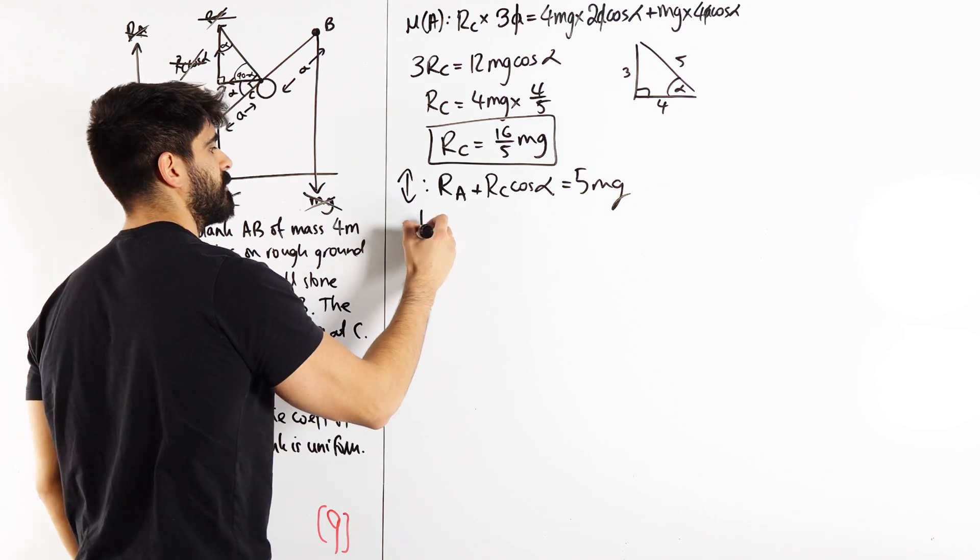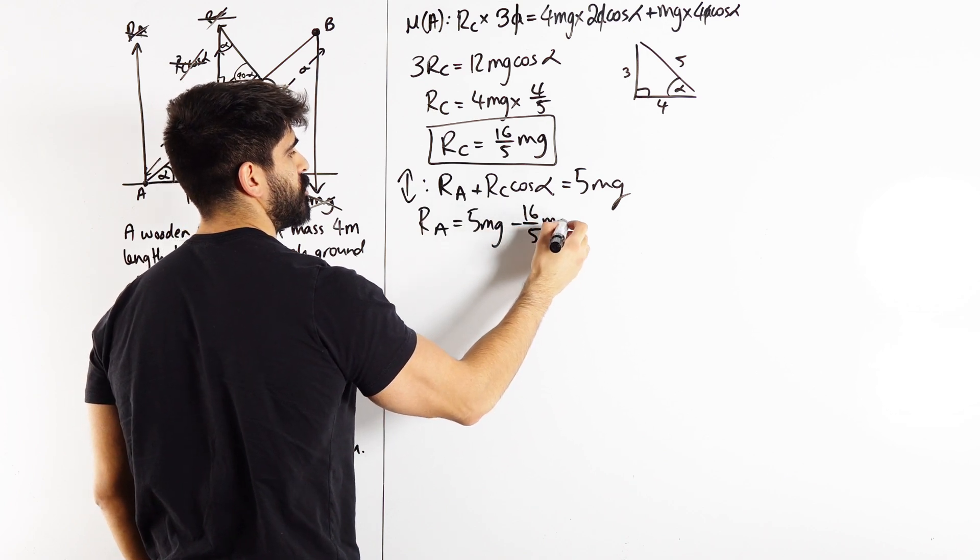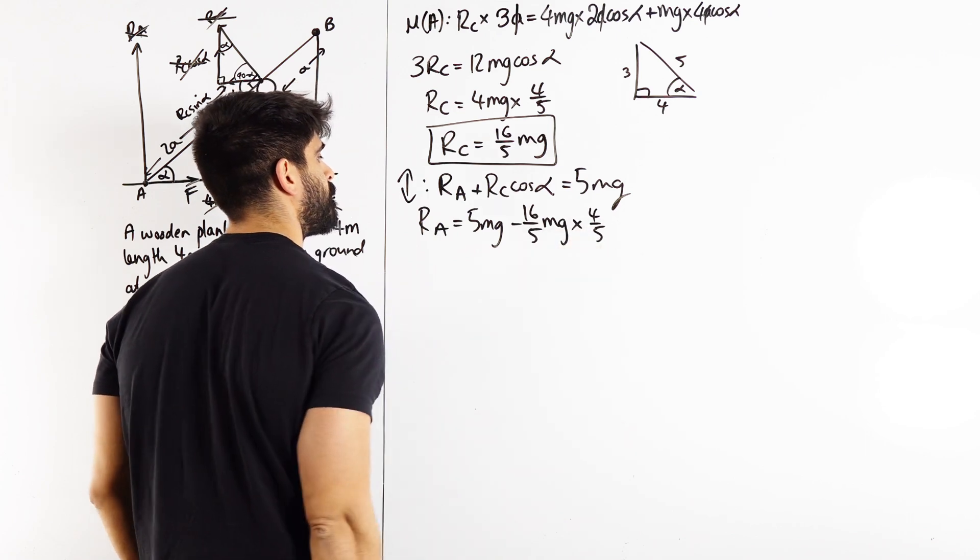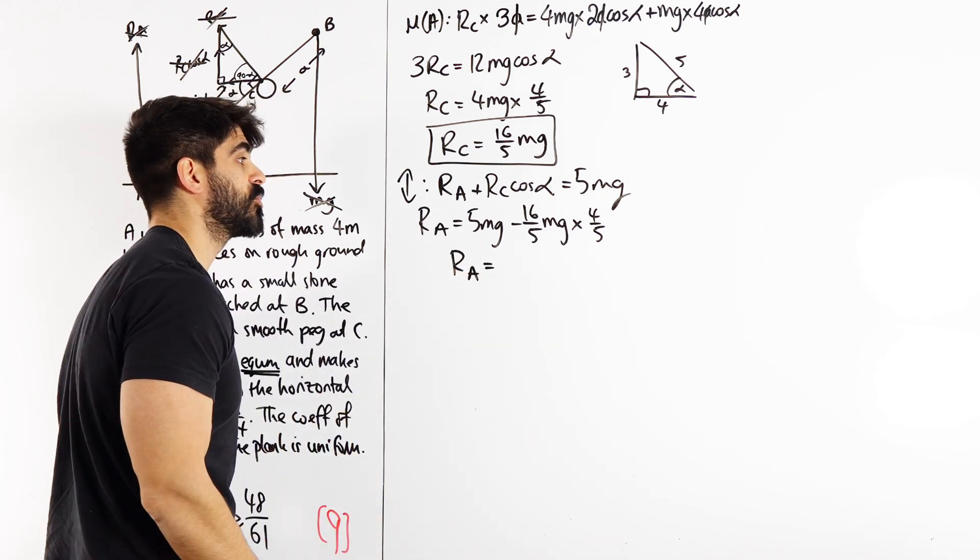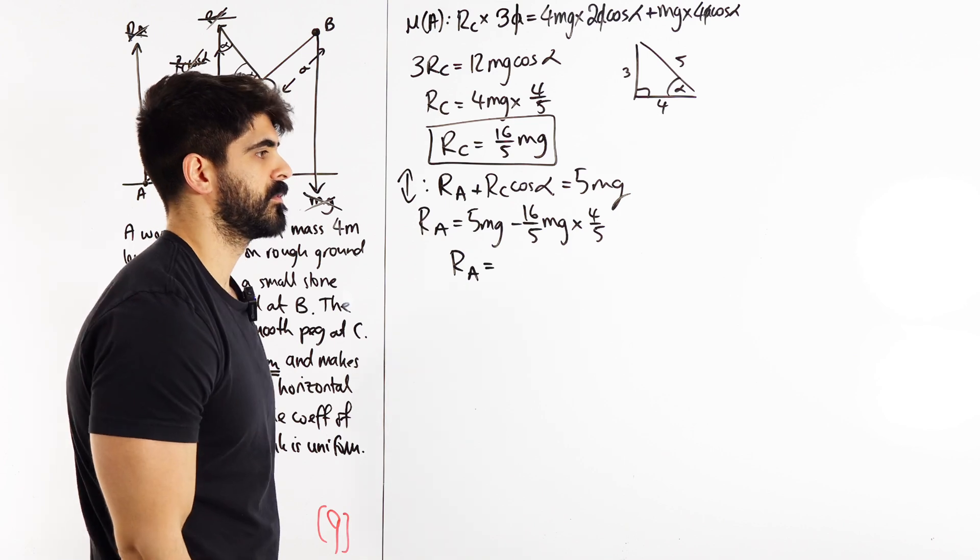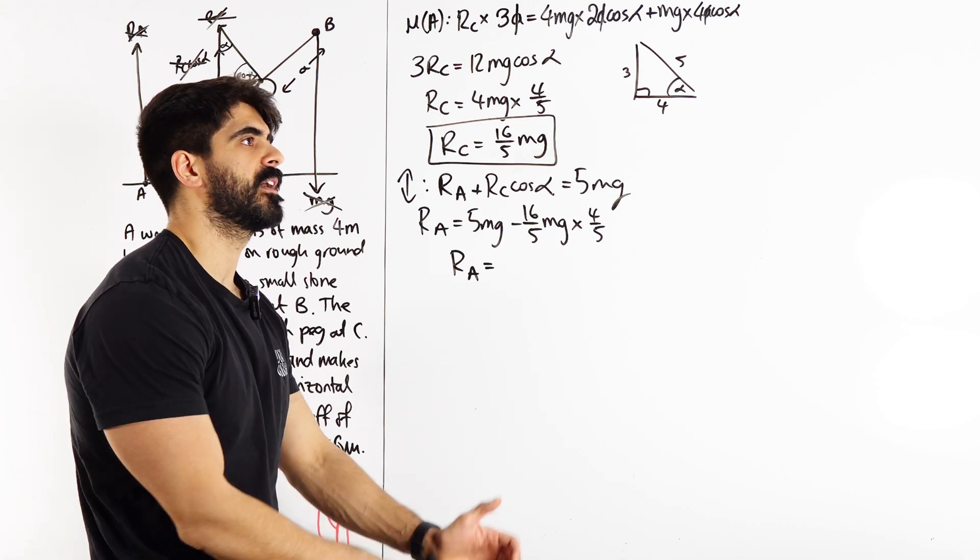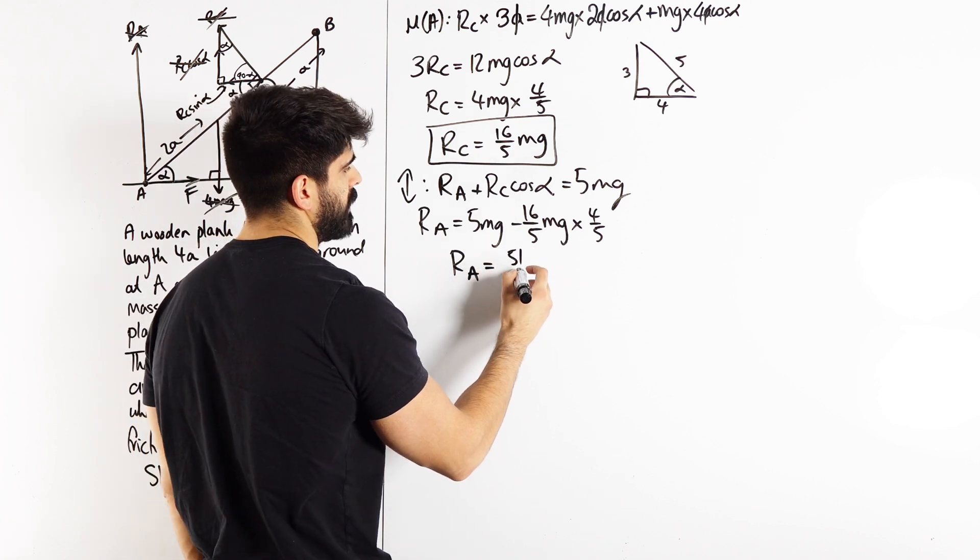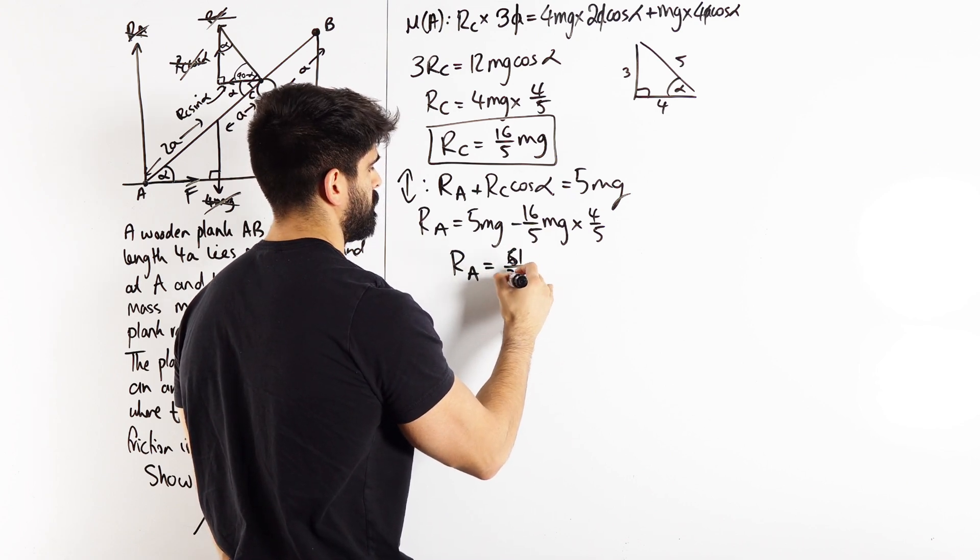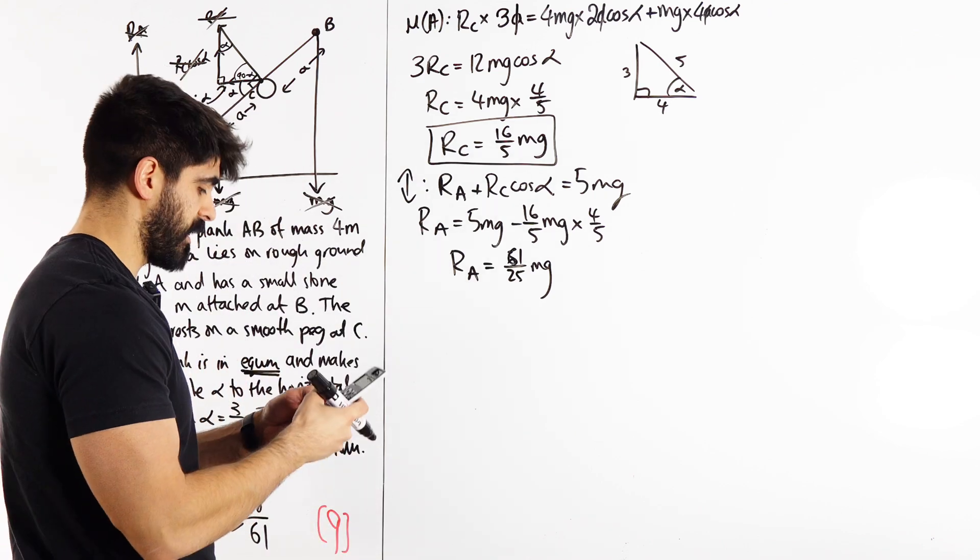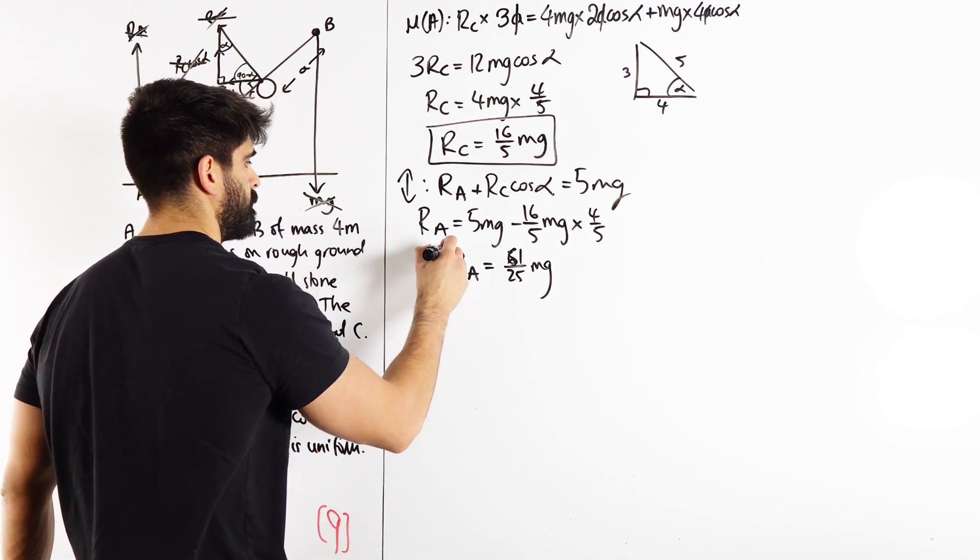So from here we can work out what RA is. RA is 5MG, subtract RC which is 16 over 5MG, times cos alpha which was 4 fifths. So from there we've got, what is that, 125 minus 64. 125 minus 64 is what, 36 plus 25, 36 plus 25, like 51. I don't even think that's right. 36 plus 25, 61. Bruh. 5 minus 16 over 5 times 4 fifths.